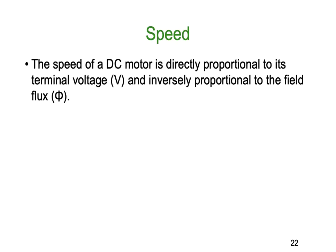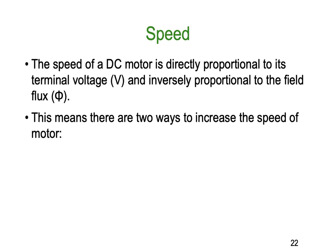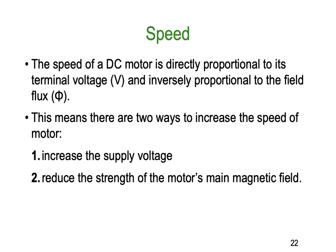The speed of a DC motor is directly proportional to its terminal voltage and inversely proportional to the field strength. If the voltage goes up, speed goes up; if voltage goes down, speed goes down. Conversely, if the field strength increases, speed decreases. This means there are two ways to increase the speed of a motor: increase the supply voltage, or reduce the strength of the main magnetic field.